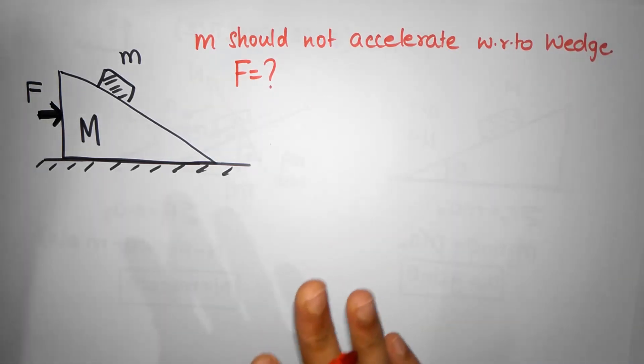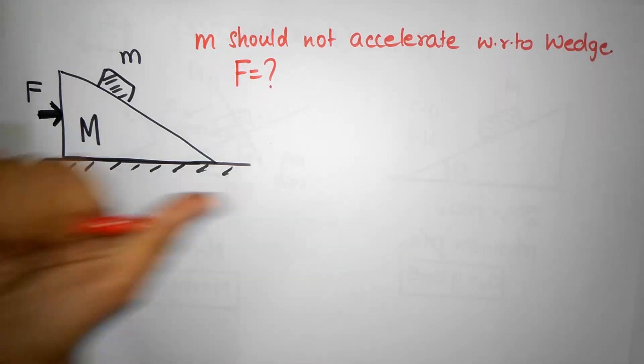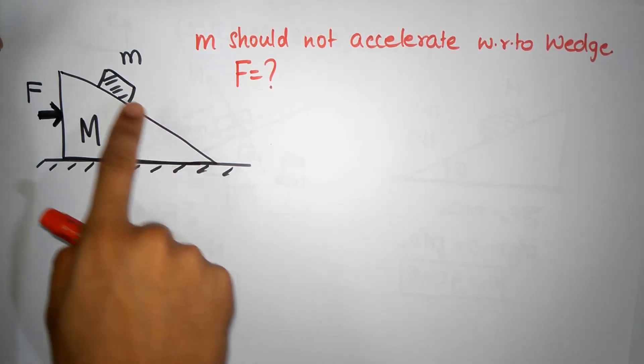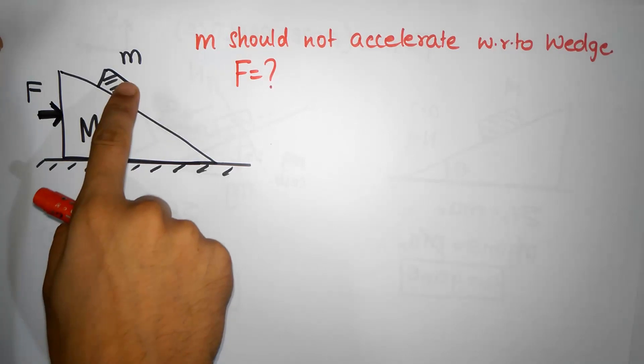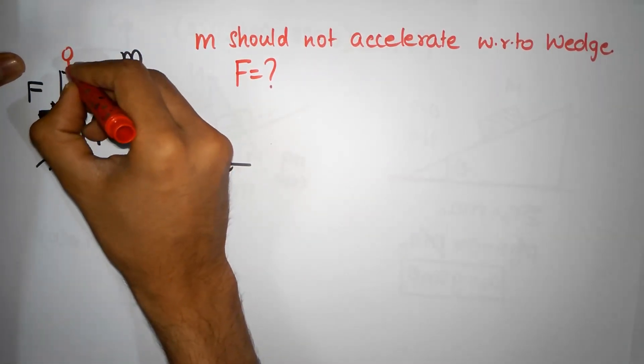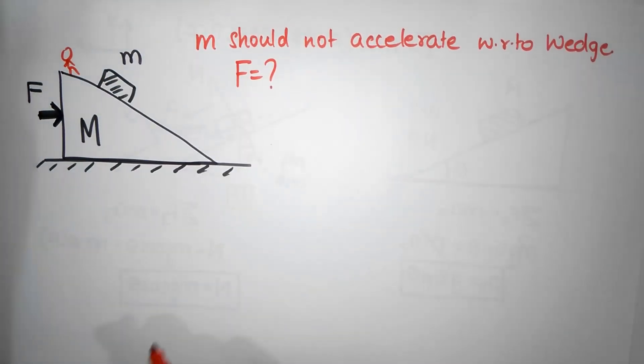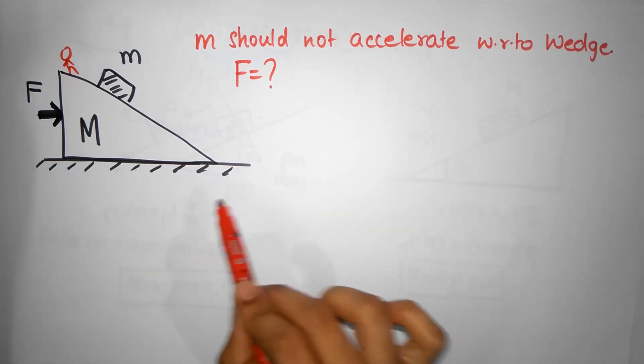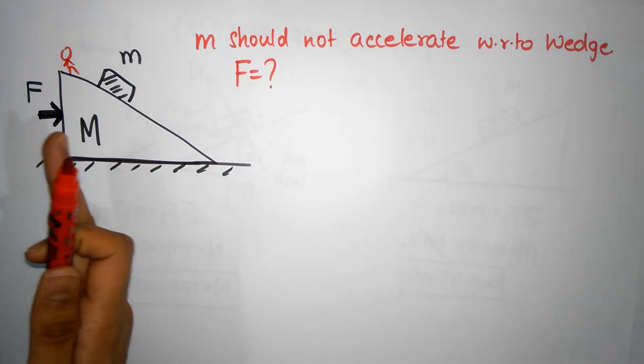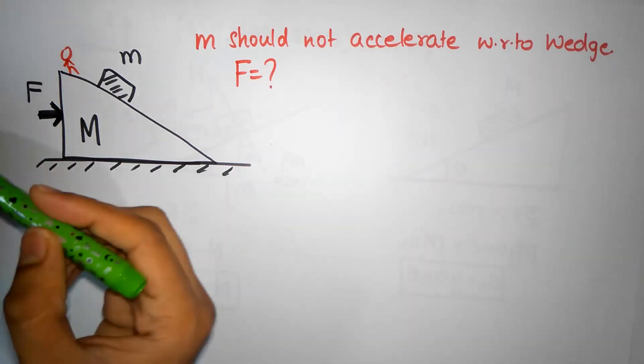Why would pushing the system this way keep the block from accelerating down? The trick is to sit on the wedge - go into the non-inertial reference frame of the wedge. Since the whole wedge is accelerating towards the right with acceleration a...